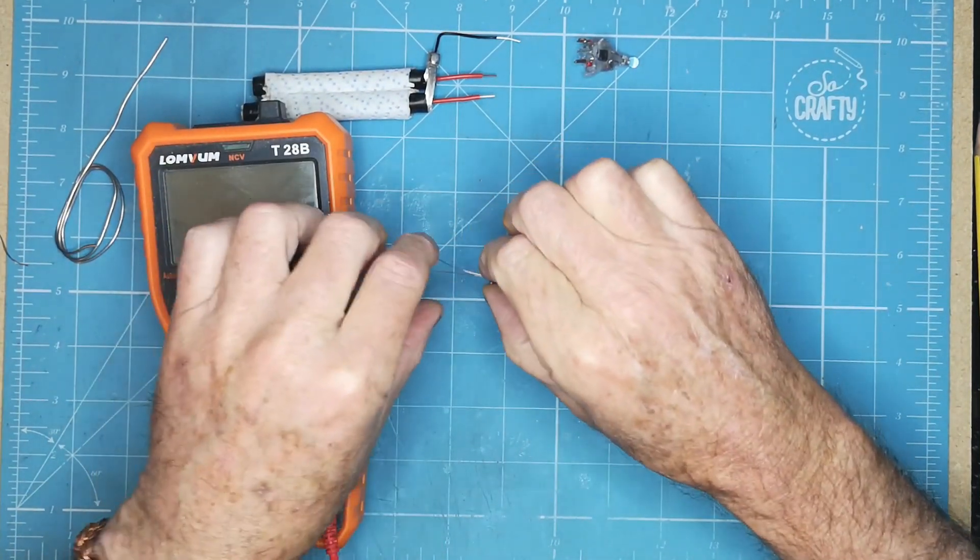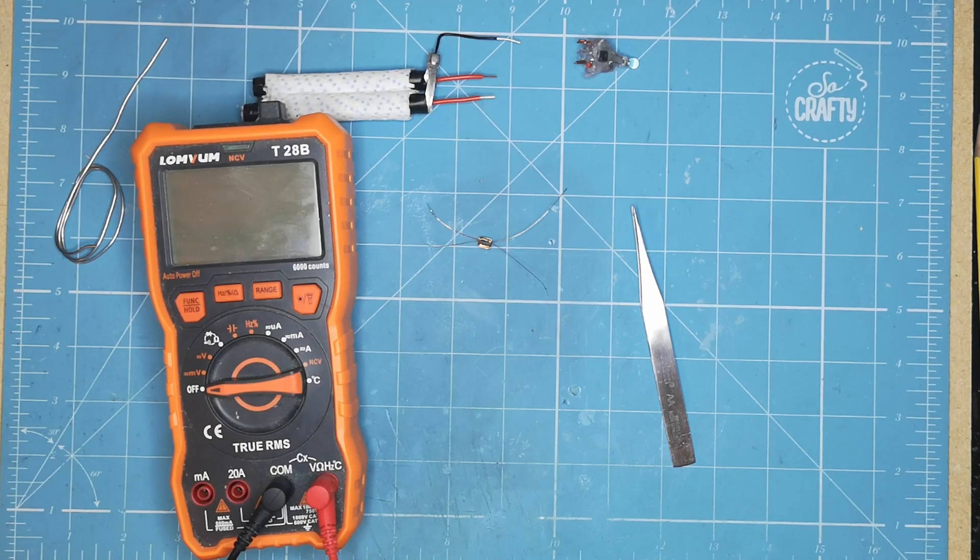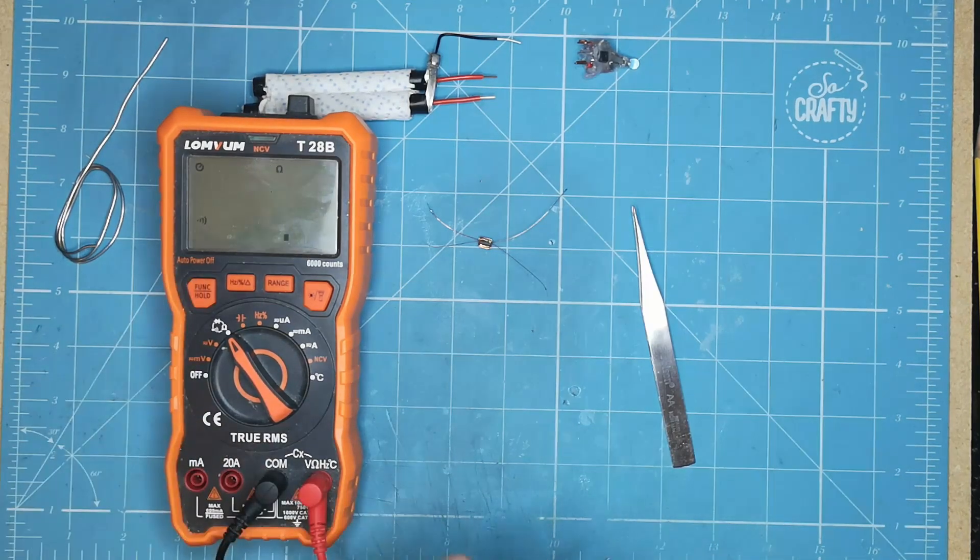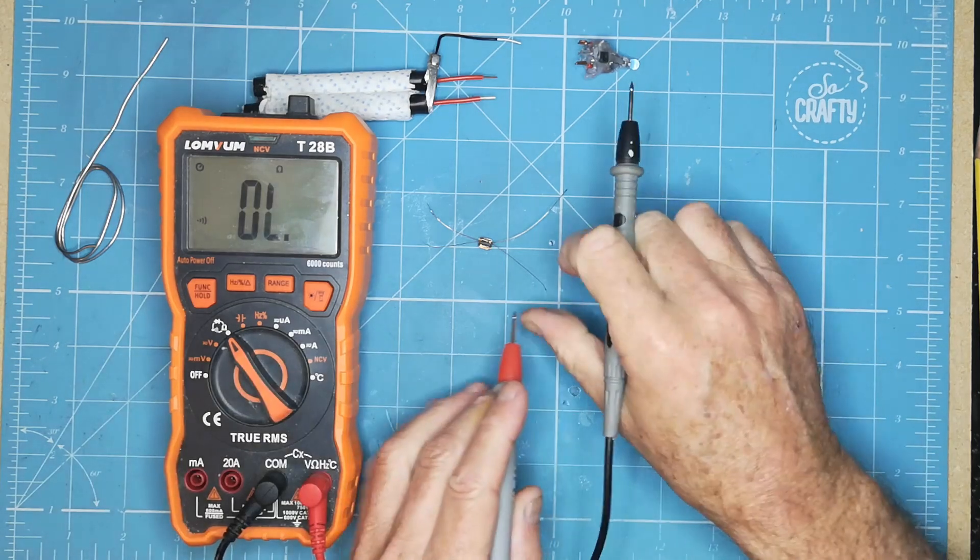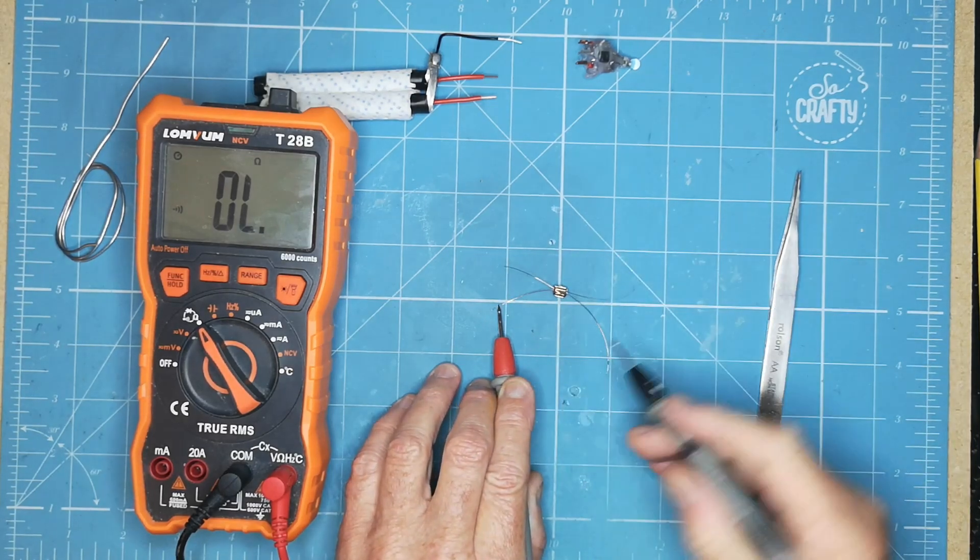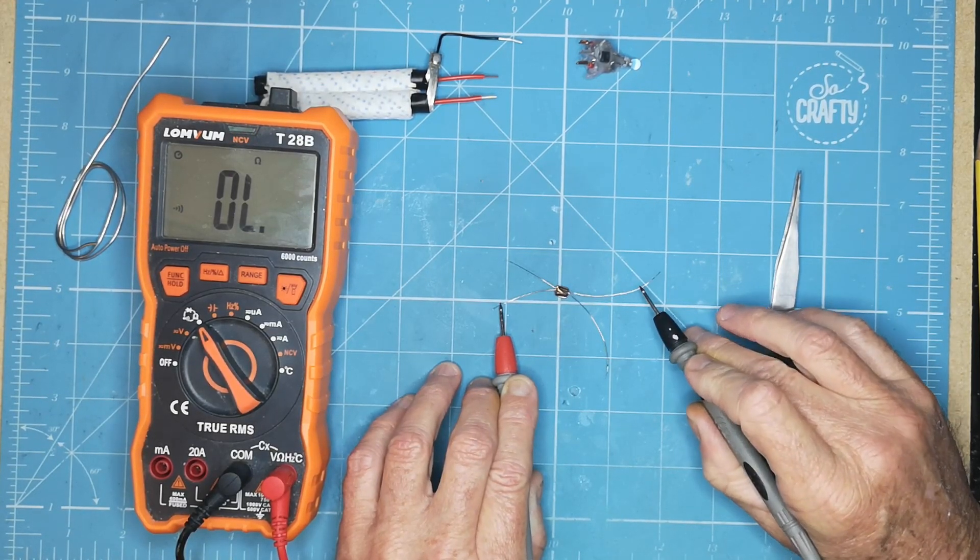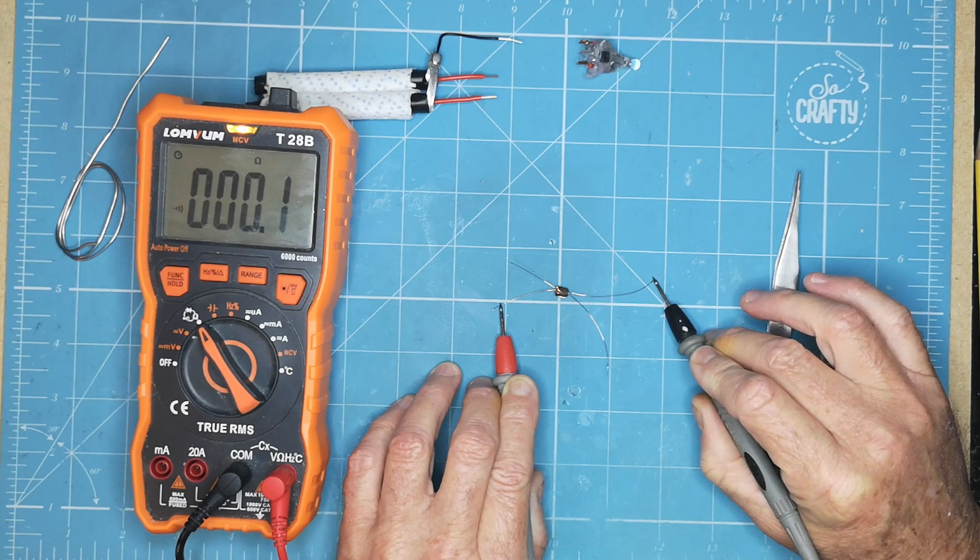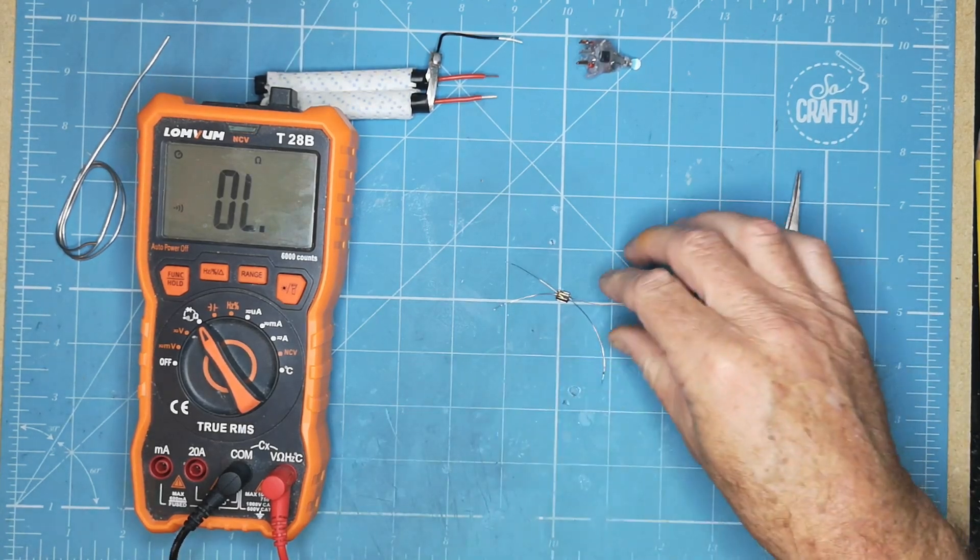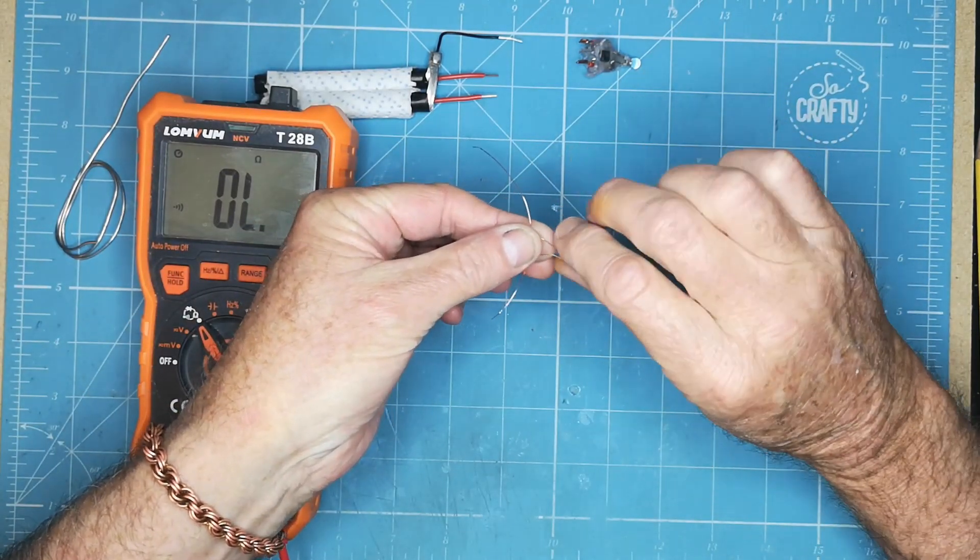Now what we're going to do is we are going to find out which wires match across. I don't know if you can see that, it's on continuity. So what we'll do is we just hold that onto there, onto there. It's not that one, not making good contact but there you go so those two are the same wire.